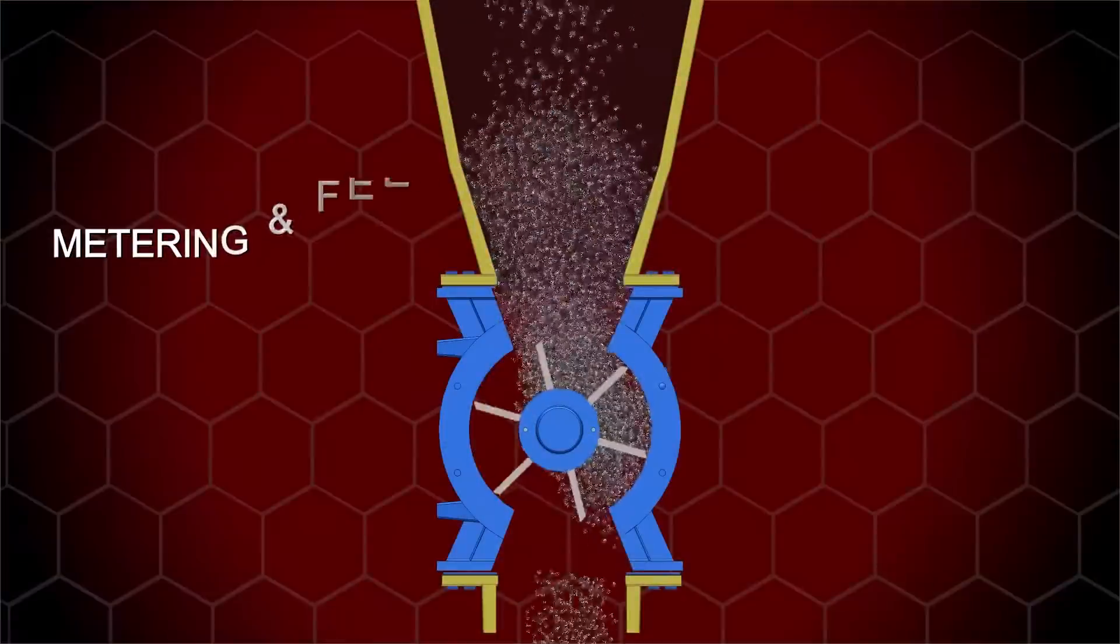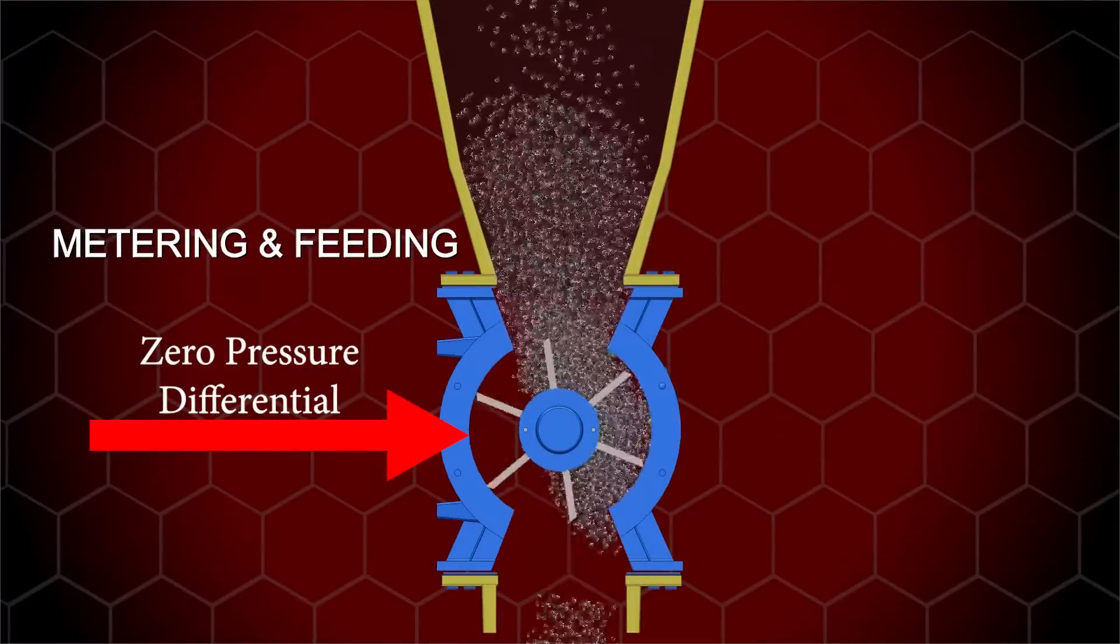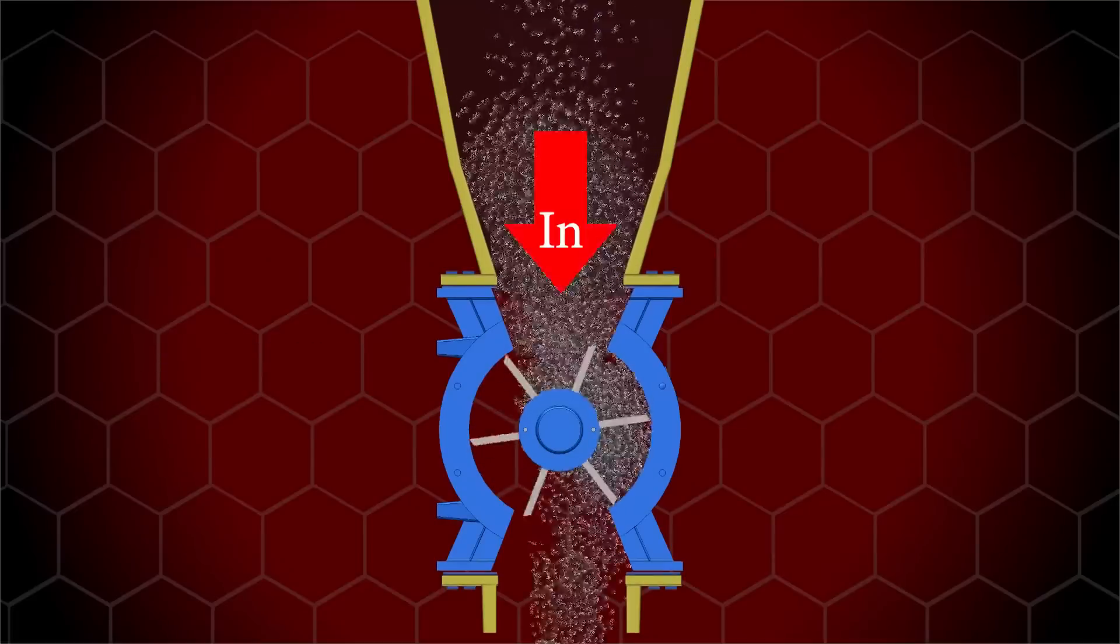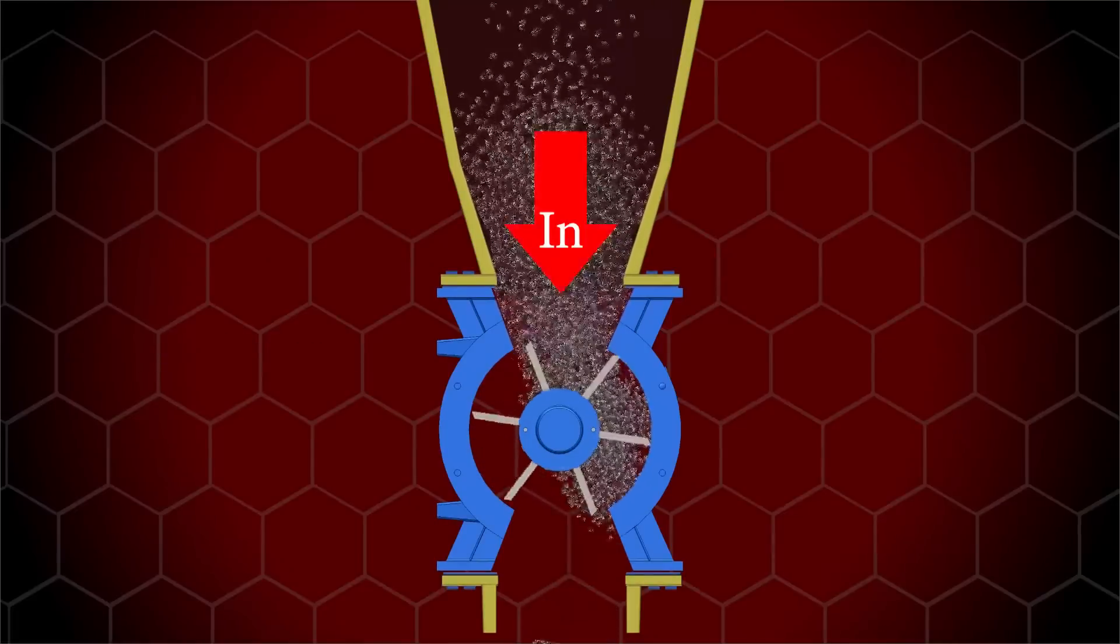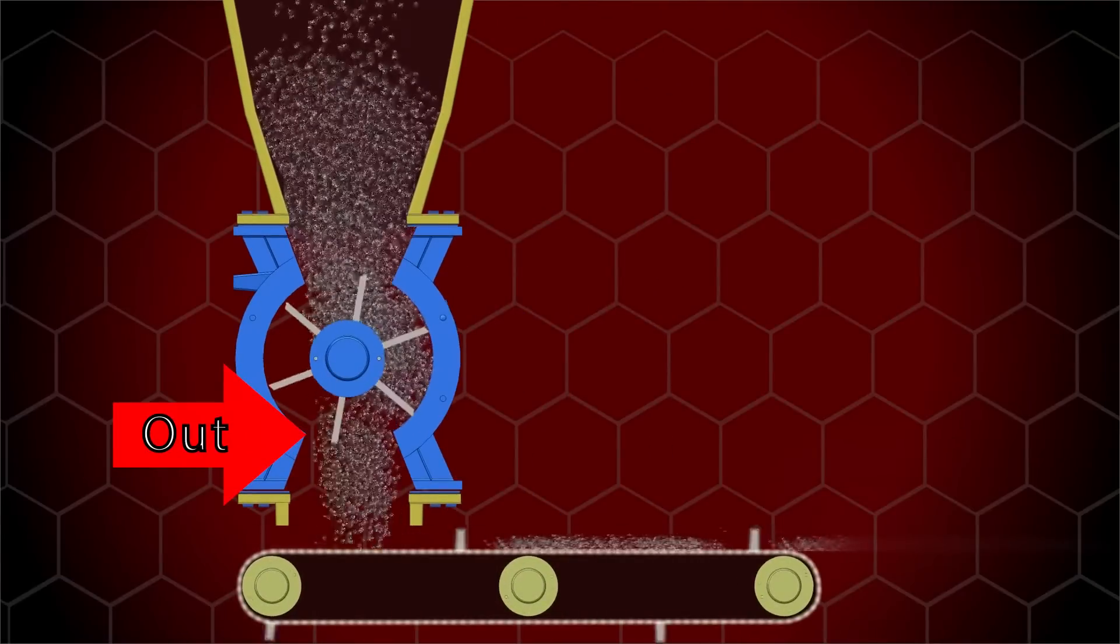Metering feeding is where the valve is not responsible for air pressure sealing but only metering material at a set fixed rate. As the vanes rotate, material enters through the top into the pockets and then exits through the bottom outlet to a bin, conveyor, or other device.